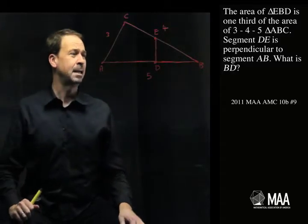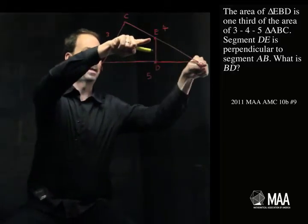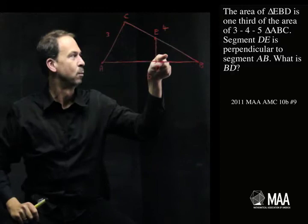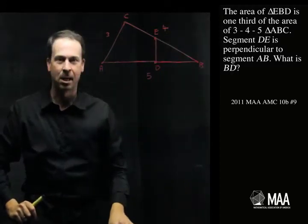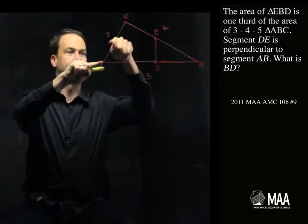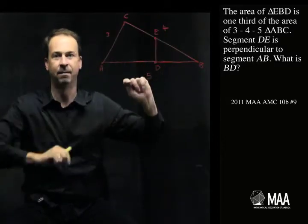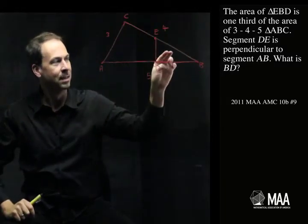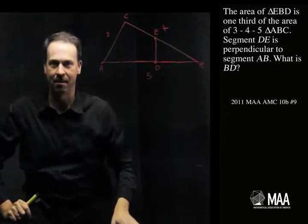The area of triangle EBD. So where is EBD? The area of this triangle, the small triangle, is one third of the area of the 345 triangle ABC. Okay, that's the big triangle. Yep, 345. Alright, so we've just been told the small area is one third of the big area.